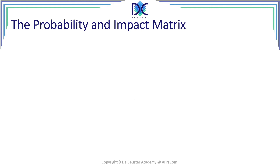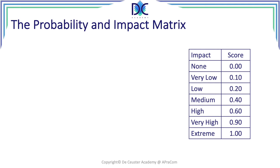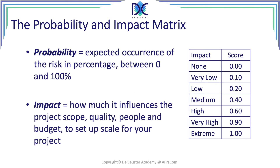The first thing we can have a look at is the probability and impact matrix. We look at some scores — we have an impact score ranging from zero (very low) to extreme. Probability is basically the expected occurrence of the risk in percentage, between zero and 100 percent. When the probability is zero, there is no risk — it will not happen. When it's 100 percent, we are sure it's going to happen. The impact is how much it influences the project scope, quality, people, and budget, and we have to set up a scale for our project.